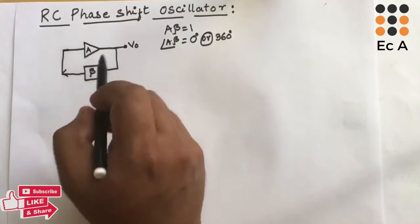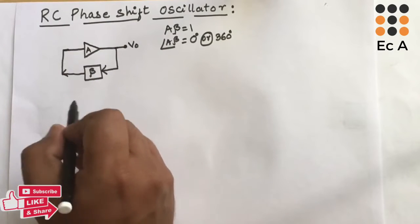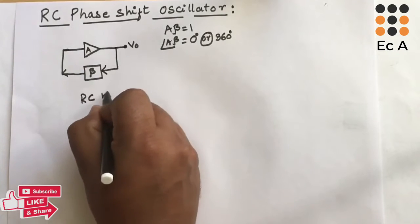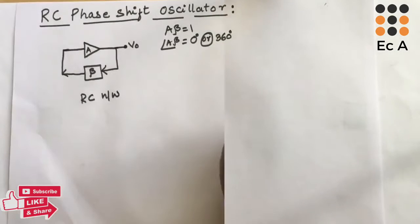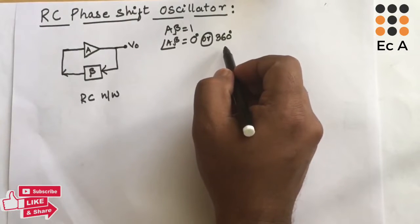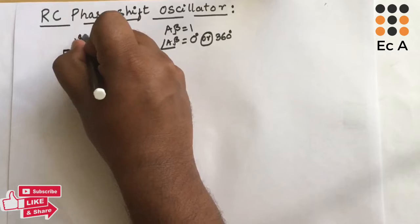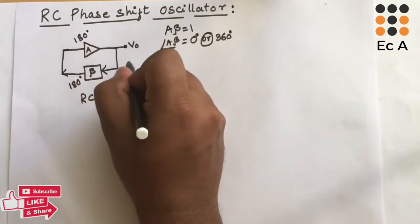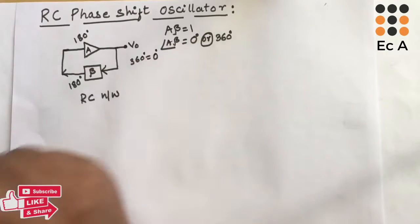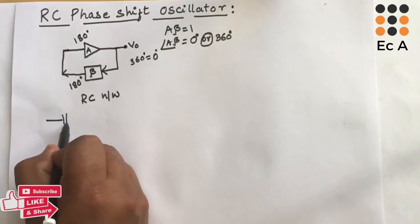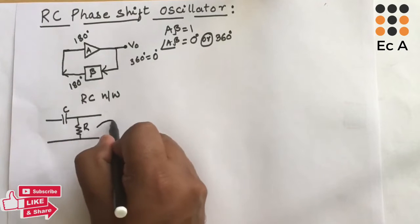In the RC phase shift oscillator, the feedback stage uses a resistor and capacitor combination network, known as the RC network. To obtain 0 degree or 360 degree phase shift, the feedback circuit should provide 180 degree phase shift and the amplifier stage should also provide 180 degree phase shift, so the overall phase shift will be 360 degrees, which is the same as 0 degrees.